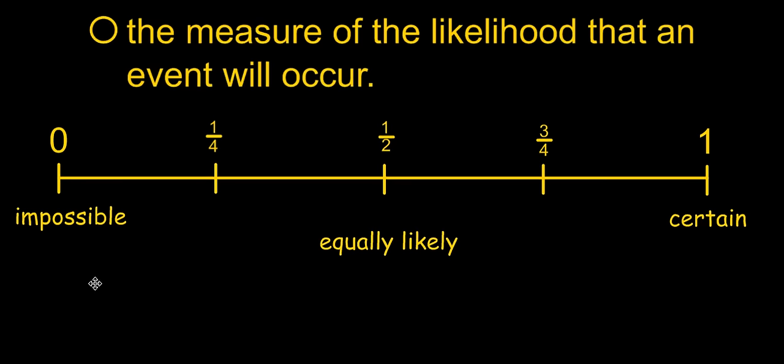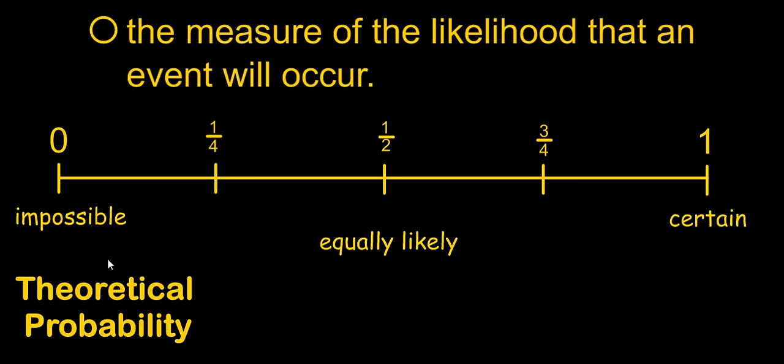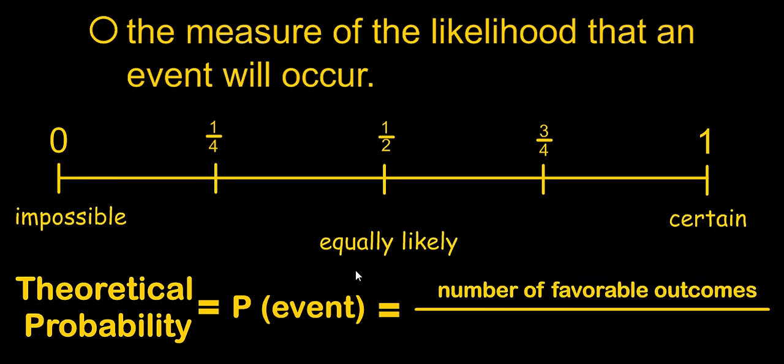Most of you have probably heard of probability, and what you didn't realize is the type of probability you learned was theoretical probability. This can be written as P, or probability, of an event. And when we're finding theoretical probability, we put the number of favorable outcomes over the number of total possible outcomes.